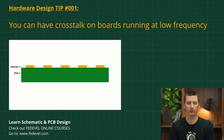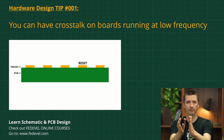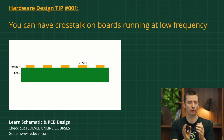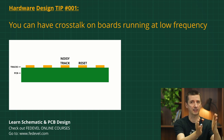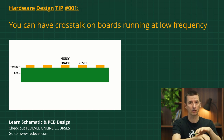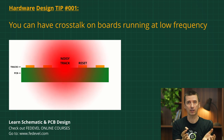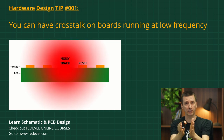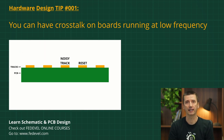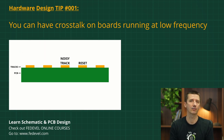Sometimes this noise can be so high that it can change the levels of the signals on the other tracks. For example, if you route a reset signal close to a noisy track, then this noisy track can change the level on your reset signal and your board may randomly reset.